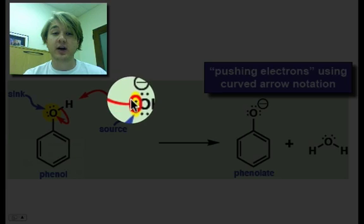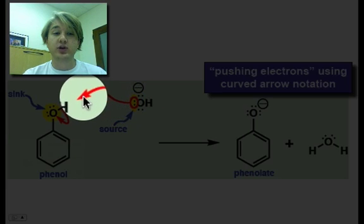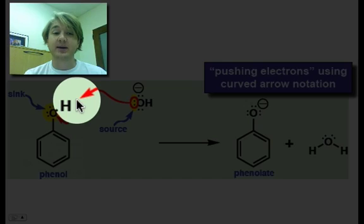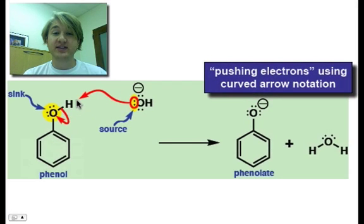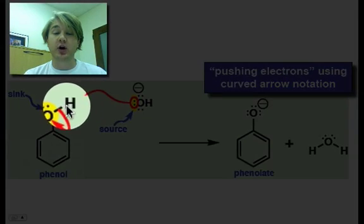have the tail of our arrow here, push through, and attack something. In this case, what gets attacked in this proton transfer reaction is the hydrogen on our phenol.